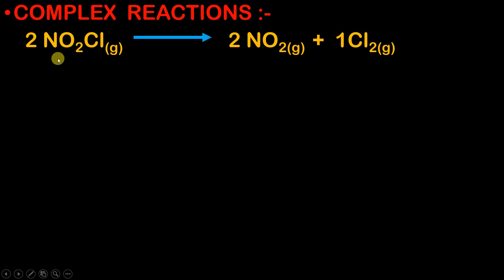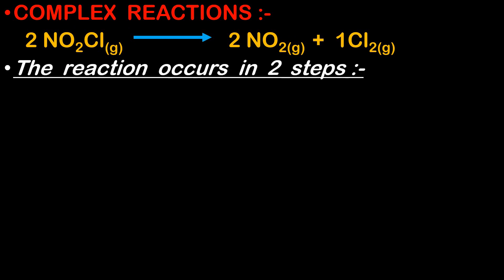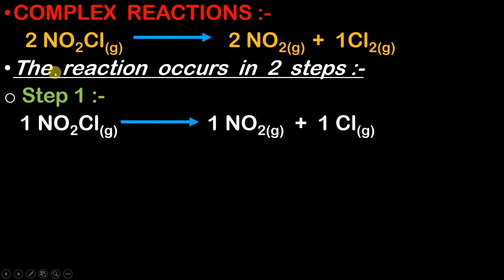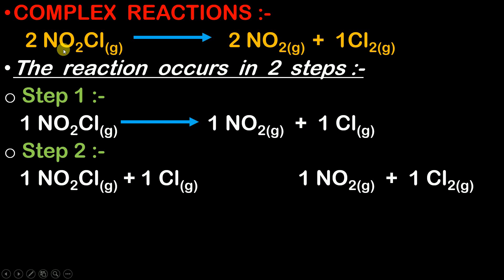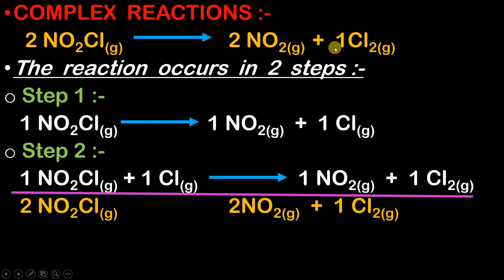First, let us understand what complex reactions are. Consider this example: this reaction does not take place directly. Instead, it occurs in two steps. In step one, one mole out of two moles of NO2Cl gets dissociated into one mole of NO2 and one mole of monoatomic chlorine gas. In step two, the remaining one mole of NO2Cl reacts with that one mole of Cl to give one NO2 plus one Cl2. Adding step one and step two gives you the overall reaction.